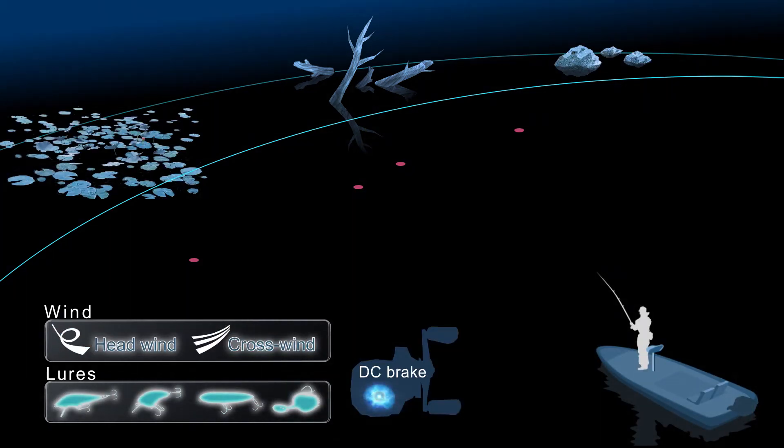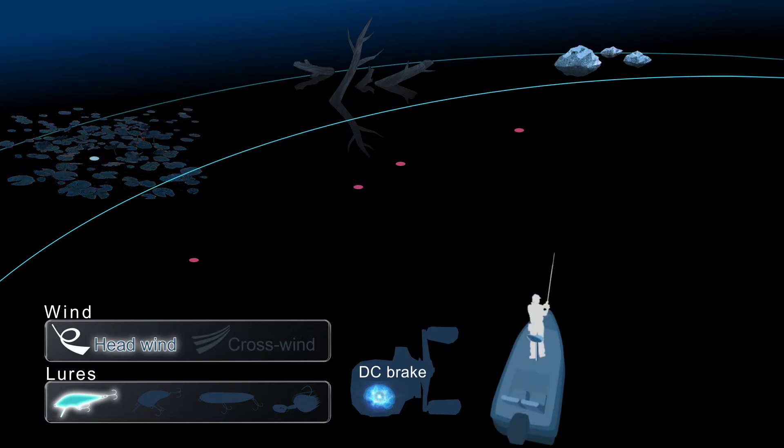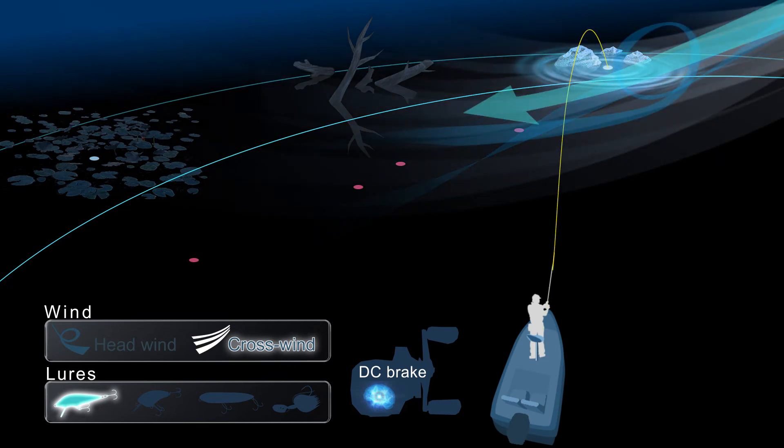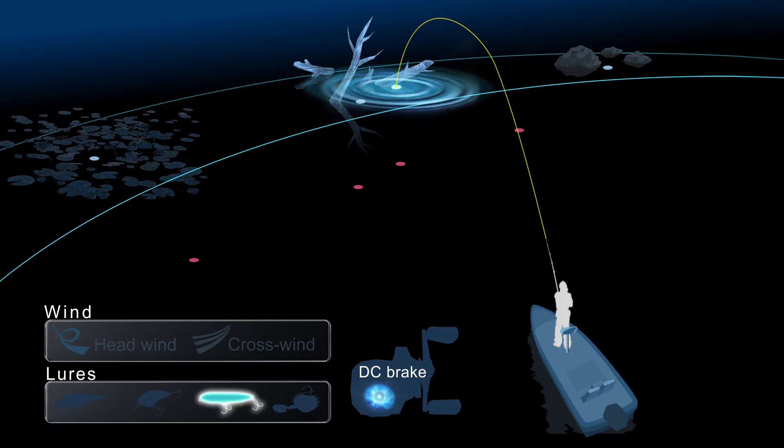However, DC Brake provides you trouble-free casting with less manual adjustment regardless of lure or conditions. DC Brake can match any conditions to provide anglers with easy, trouble-free and long distance casting.